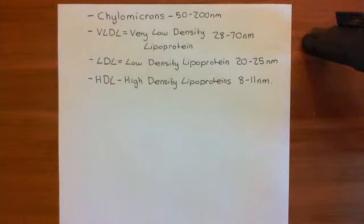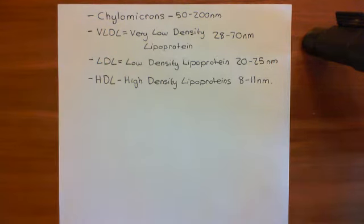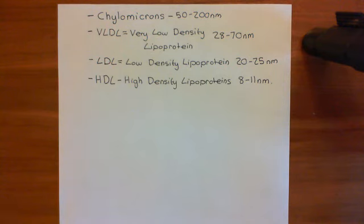So that's an introduction to the lipoproteins, the different apolipoproteins, and the different types of lipoprotein. At the moment, all I've told you about these different forms is their size. What we will come on to is their function and also which apolipoproteins they have embedded within that phospholipid monolayer. We'll call it there for this video and begin the discussion of the physiological pathways in the next video.